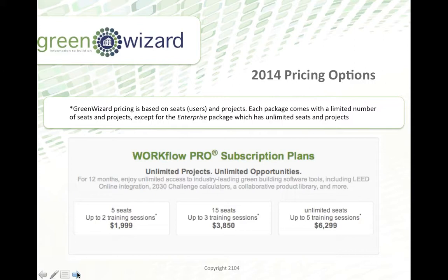Pricing options are really simple. GreenWizard is not a project-specific tool — we are subscription-based on seats. We've got an option for just about any firm, from a single seat to a five-seat to an enterprise level. The ROI on these subscriptions is incredibly fast, even with an enterprise license. If you've got 10 or 20 people using the system saving five to ten hours of time in a month or two, you've almost paid for the entire subscription. You can use this firm-wide or project-specific. It's unlimited projects, unlimited seats at the enterprise level, and training and implementation are included in the subscription prices.